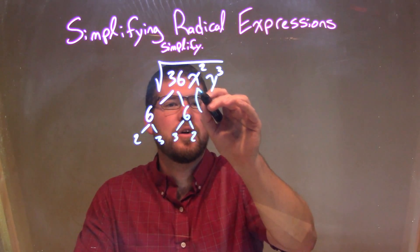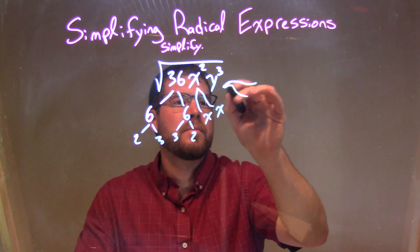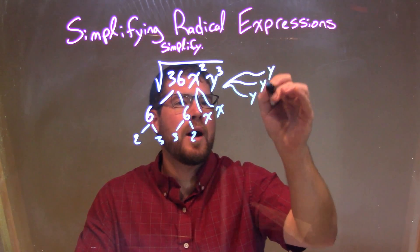x squared is just x times x, and y to the third is just y times y times y.